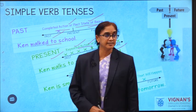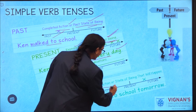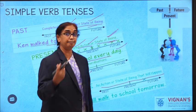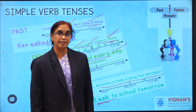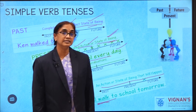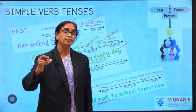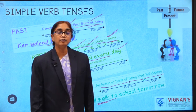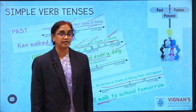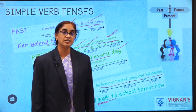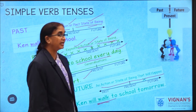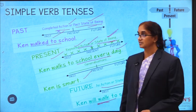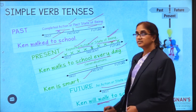When do we use simple future tense? It is used to refer to an action or state of being that will happen in the future. For example: 'Ken will walk to school tomorrow' — Ken usually goes to school by bus, but tomorrow he will walk. There is a variation from the routine. 'Ken usually sits at the last bench, but today he will sit on the front bench.' These are examples of simple tenses — simple past, simple present, and simple future.